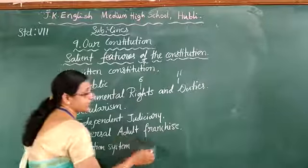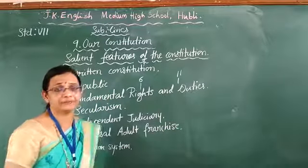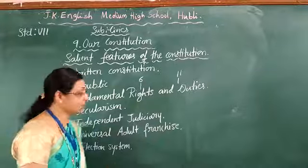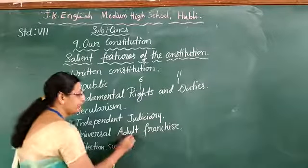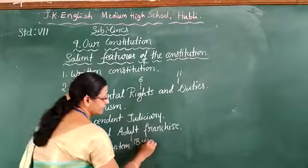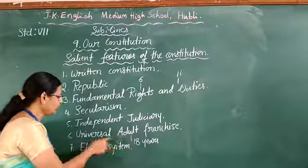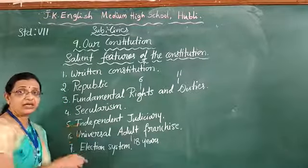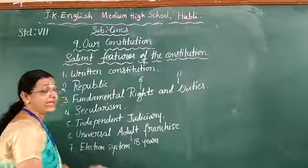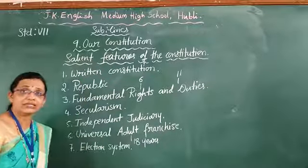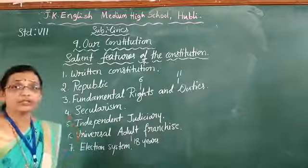Next, universal adult franchise. Franchise means the power to put your vote in the election — that is called franchise. Adult franchise means the adult, that is, in India the person who has completed 18 years of age is eligible to put the vote in the election. That is called universal adult franchise, and that is also mentioned in the constitution.